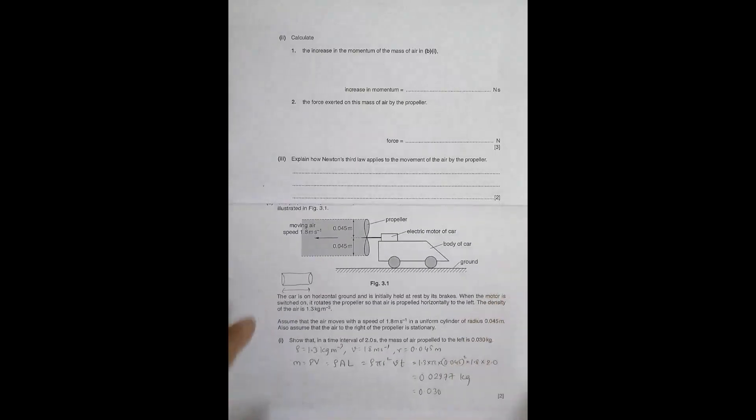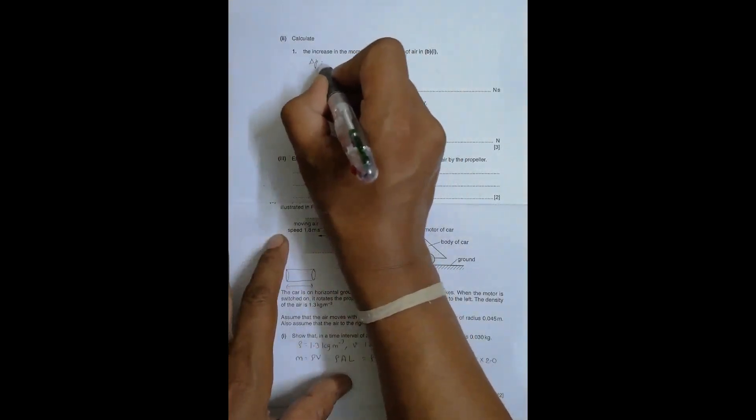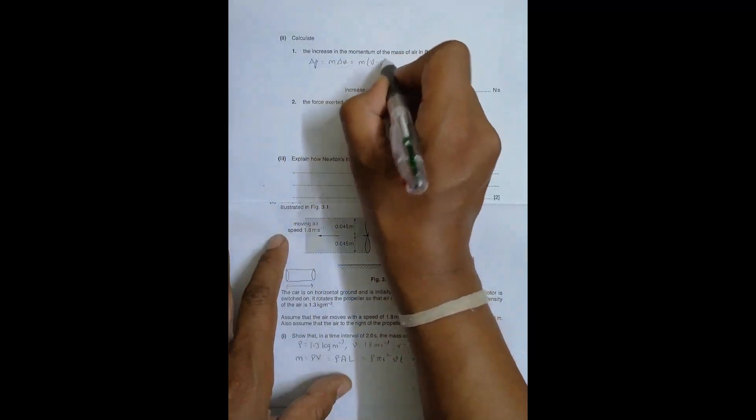In the next question it says we have to find the increase in the momentum of the mass of air. The air was initially at rest, so initial velocity is 0. Now we have to find the increase in momentum. Delta p is equal to mass into delta v, that's equal to mass into v minus zero.